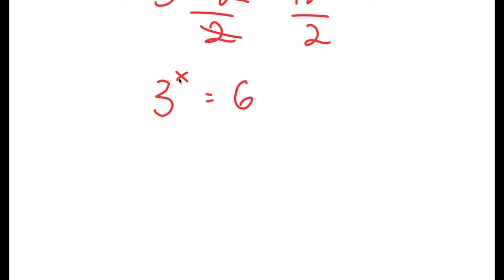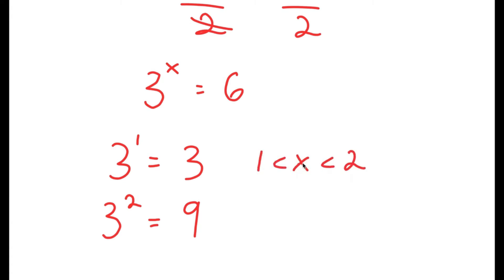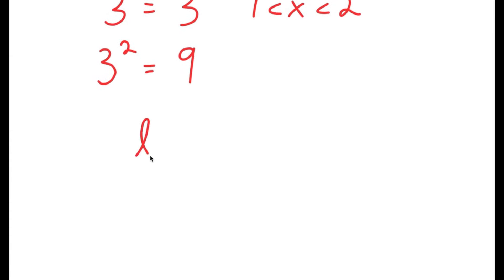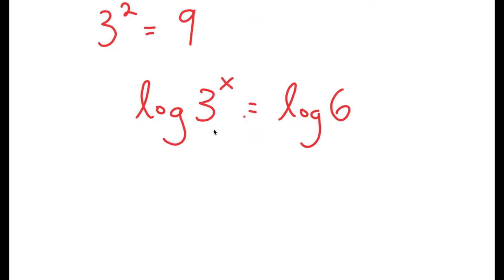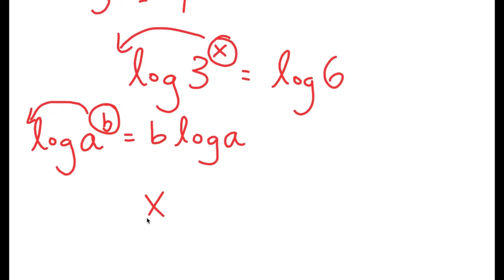To solve this, we know that x is going to be a decimal because 3 to the power of 1 is 3 and 3 to the power of 2 is 9, so x is going to be somewhere in between 1 and 2. To find the exact value of x, I'm going to take the log on both sides, so I get log 3 to the power of x is equal to log 6. Since I have log a to the power of b, I can move the exponent b to the front, giving b times log a. So I get x times log 3 is equal to log 6.